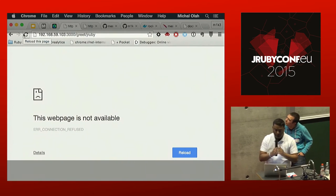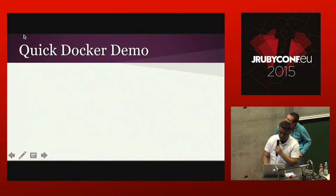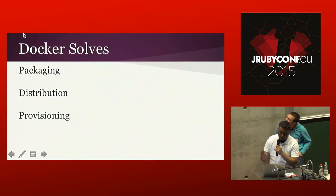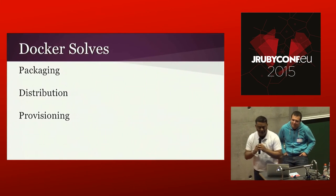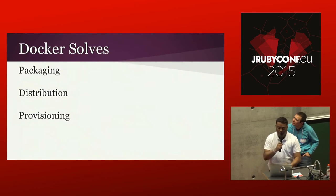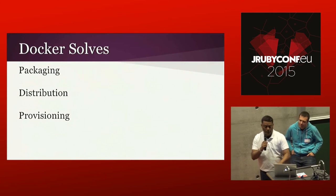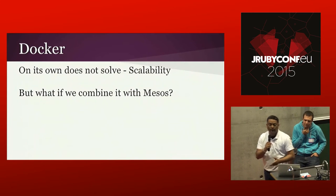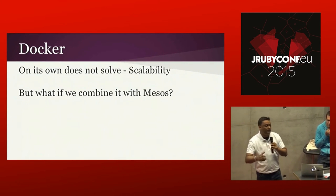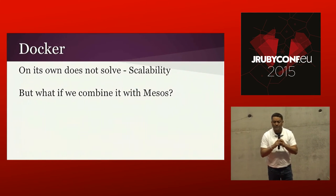So Docker solves the packaging, distribution, and provisioning of our application, but on its own it does not solve scalability. What if my application is a real hit and I'm getting 20,000 requests a second? One single container will not be able to handle it.